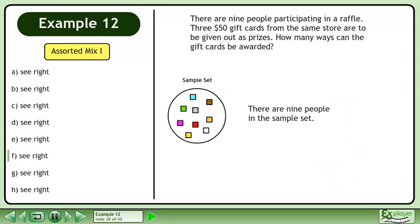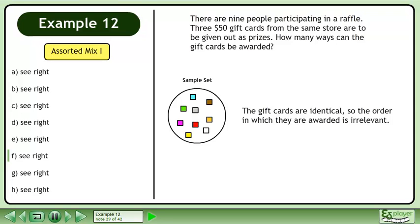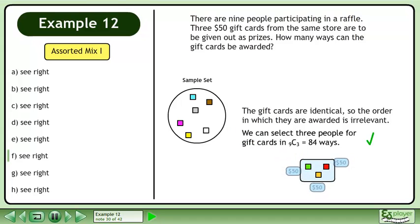There are nine people in the sample set. The gift cards are identical so the order in which they are awarded is irrelevant. We can select three people for the gift cards in 9 choose 3 equals 84 ways.